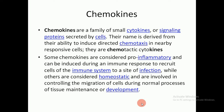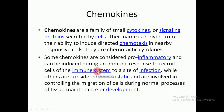Now we have chemokines. Chemokines are a family of small cytokines or signaling proteins secreted by cells. Their name is derived from their ability to induce directed chemotaxis in nearby responsive cells — they are chemoattractant or chemotactic cytokines. Some chemokines are considered pro-inflammatory and are used during an immune response to recruit cells to the site of infection, while others are homeostatic and involved in controlling cell migration during normal tissue maintenance or development.